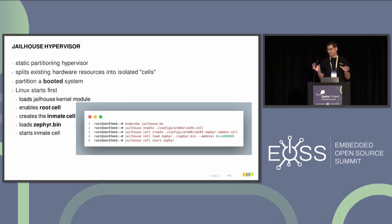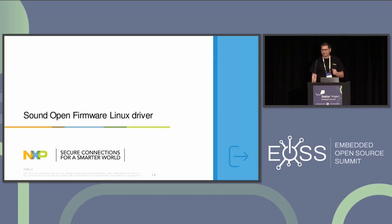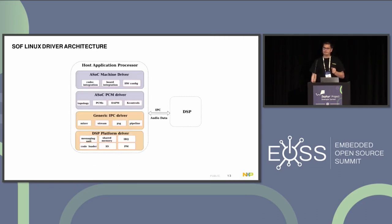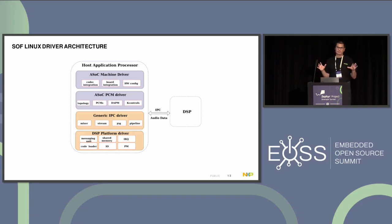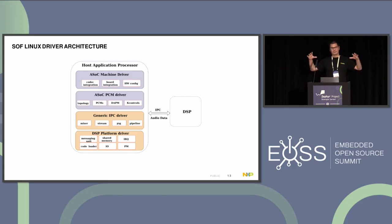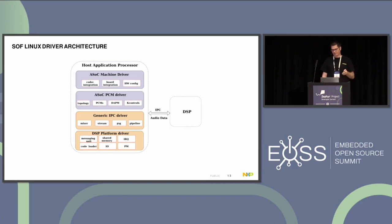After the separation, we are again in the same case as with a DSP, where one core is reserved for additional work. For the Sound Open Firmware Linux driver, this is the anatomy of the driver application — all in the ALSA layer. We have the machine driver, a piece of software that takes care of linking the digital audio interface driver, codec driver, and handling configuration parameters.